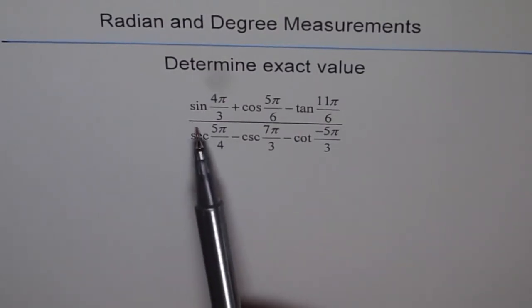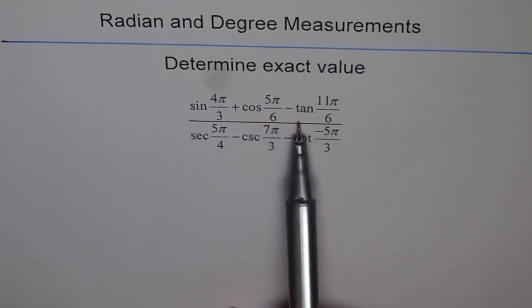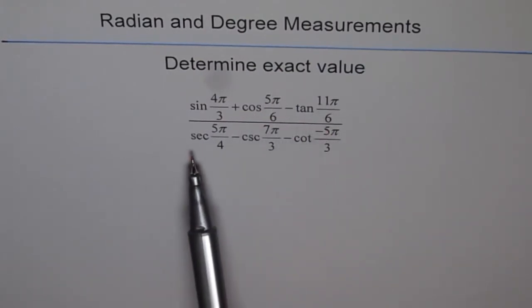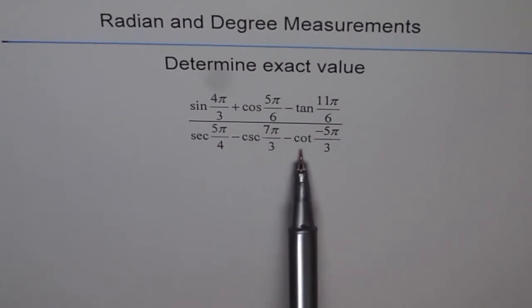Here we have sin 4π/3 plus cos 5π/6 minus tan 11π/6, secant 5π/6 minus cosecant 7π/3 minus cotangent minus 5π/3. So you got all the trigonometric functions in here and all your standard triangles.